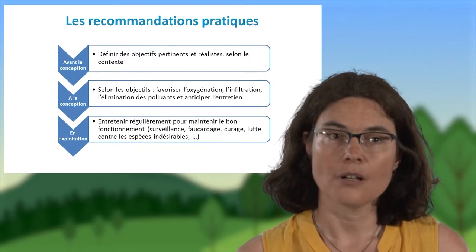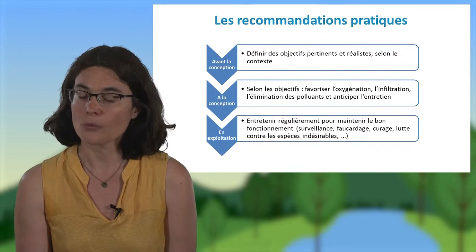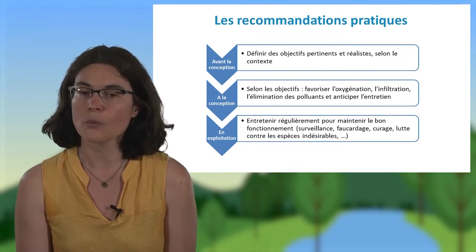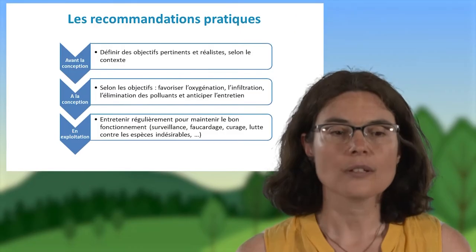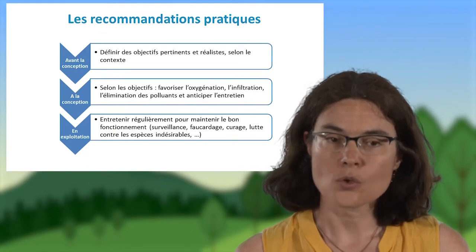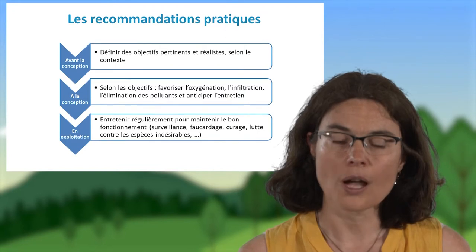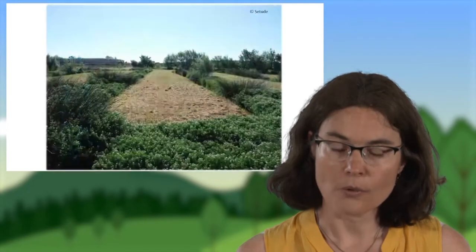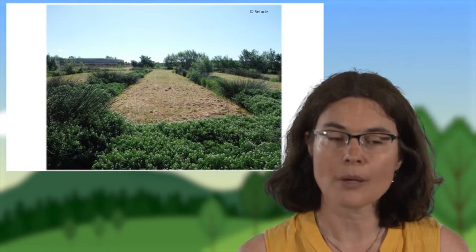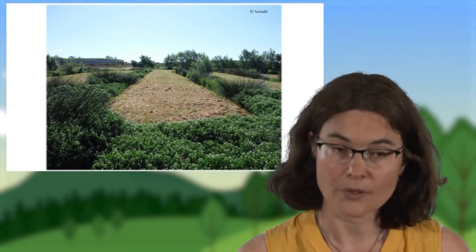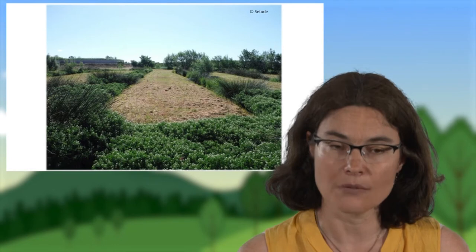En phase de conception, selon les objectifs retenus, on cherchera à favoriser différents phénomènes. Par exemple, l'oxygénation de l'eau en incorporant des cascades sur le parcours hydraulique, ou l'infiltration sous les sols en retenant une alimentation par alternance des bassins. Concernant l'élimination des polluants, on choisira des temps de séjour suffisamment longs pour que les processus naturels d'épuration aient le temps de se mettre en place. On cherchera également à anticiper l'entretien, par exemple en mettant des bandes enherbées suffisamment larges entre les bassins ou les fossés pour permettre le passage d'engins mécaniques, et en évitant de nombreux tuyaux de petits diamètres qui risquent de se colmater avec les débris végétaux.